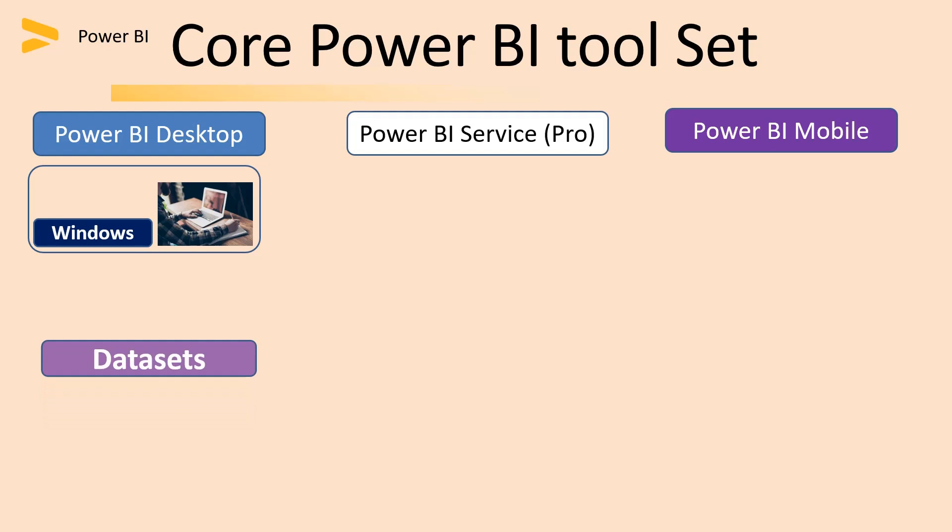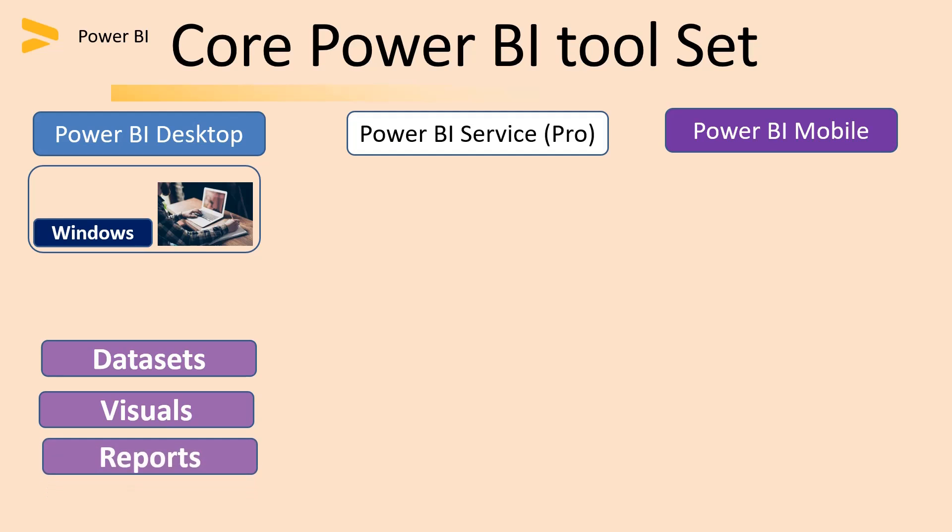In Power BI Desktop, the first thing available is data sets — which means connecting to the data sources, joining those tables, and creating relationships. It is kind of a data model where we prepare the data. Once the data sets are ready, we can create visuals such as charts, tables, column charts, bar charts, pie charts, and many more. There are reports as well, which consist of multiple pages — for example, the first page might show a profit and loss summary, and another page could show balance sheet details.